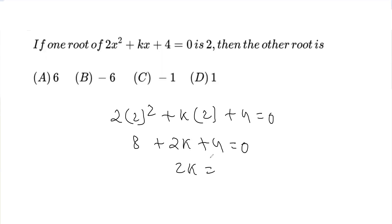So, 8 + 2k + 4 = 0. That gives us 2k = -12 on transposing to the other side, which means k = -12 divided by 2, which is -6.